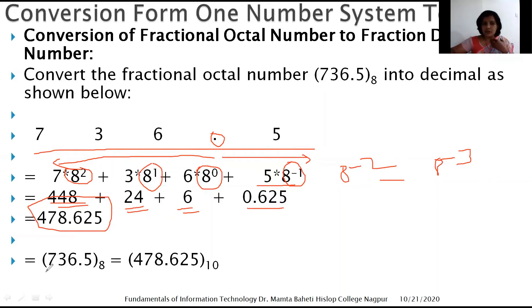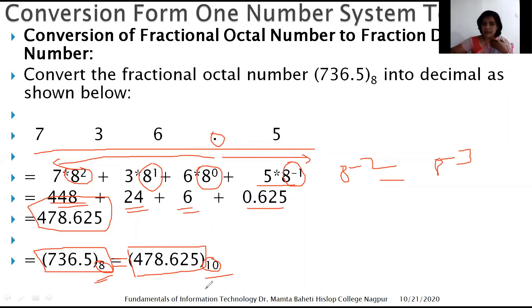Adding 448 + 24 + 6 + 0.625 gives 478.625. So (736.5)₈ = (478.625)₁₀. It is compulsory to write the base suffixes 8 and 10 — if you omit them the two numbers cannot be considered equal. Please be careful with proper nomenclature.